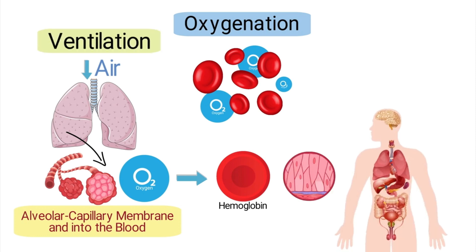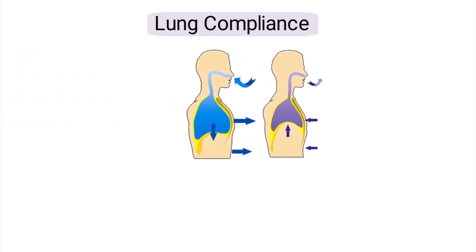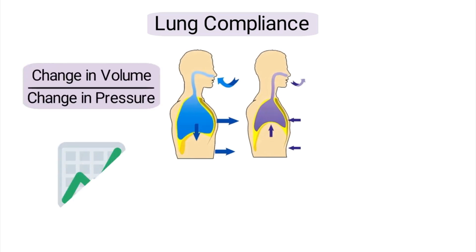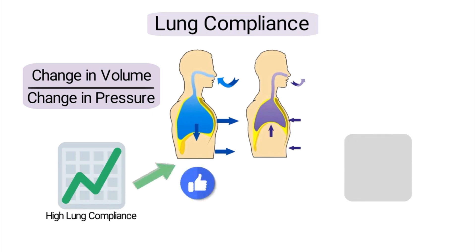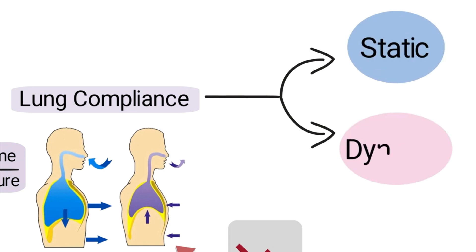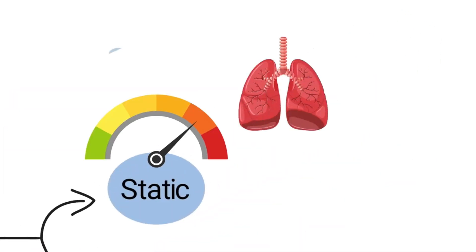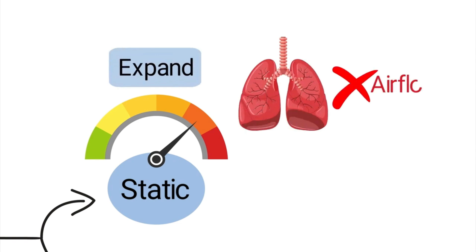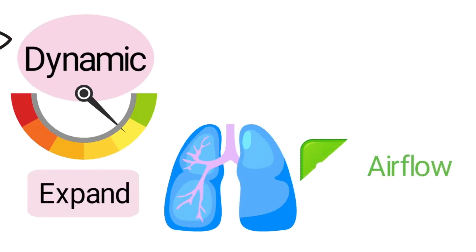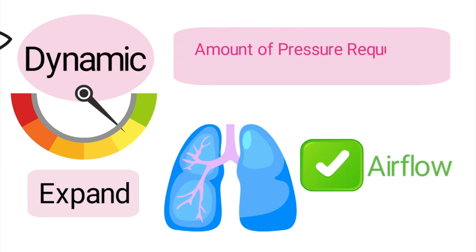Ventilation brings air into the lungs while oxygenation ensures that the cells within the body receive adequate oxygen molecules. Now let's talk about lung compliance. Lung compliance is a measurement of the lungs' ability to expand and contract, calculated by dividing the change in volume by the change in pressure. High lung compliance means the lungs can expand more easily, while low lung compliance indicates lung stiffness. There are two primary types: static and dynamic. Static compliance measures the lungs' ability to expand when there is no airflow, determined by the pressure required to inflate the lungs at a given volume. Dynamic compliance measures the lungs' ability to expand when airflow is present, determined by the pressure required to produce a given flow rate.